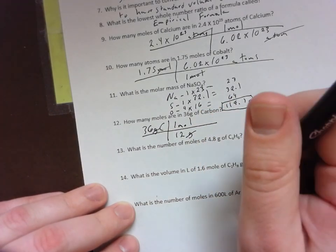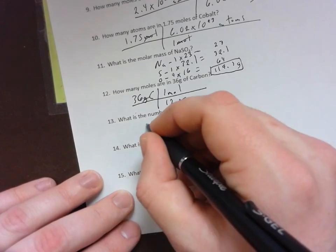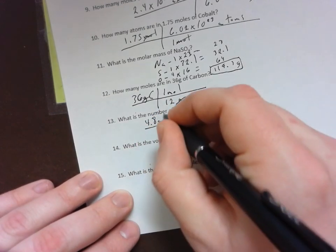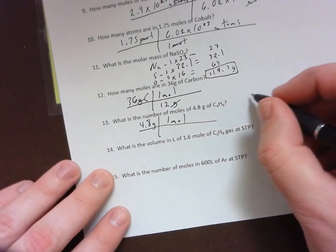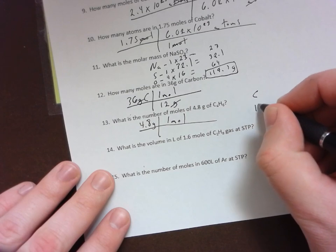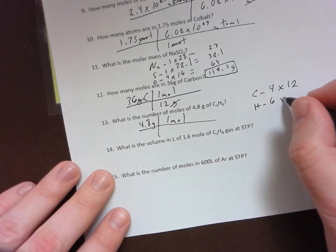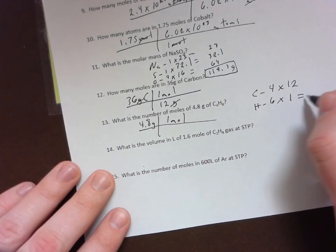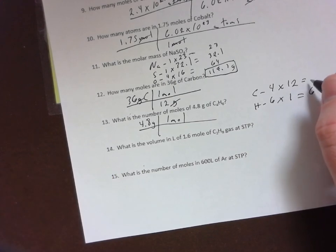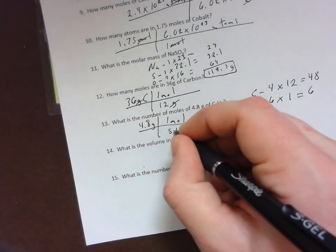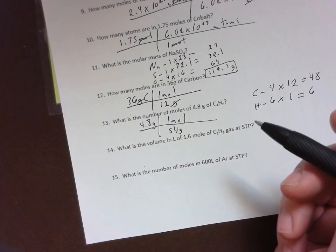What is the number of moles for this many grams? I have 4.8 grams to start with, I'm trying to go to moles. I have to do my molar mass, so I have C and H. I have 6 H's, I have 4 C's. C's are 12, H's are 1, so I have 6 and 48, so 54 grams. I would divide 4.8 by 54, which is gonna be less than 1 for my moles.